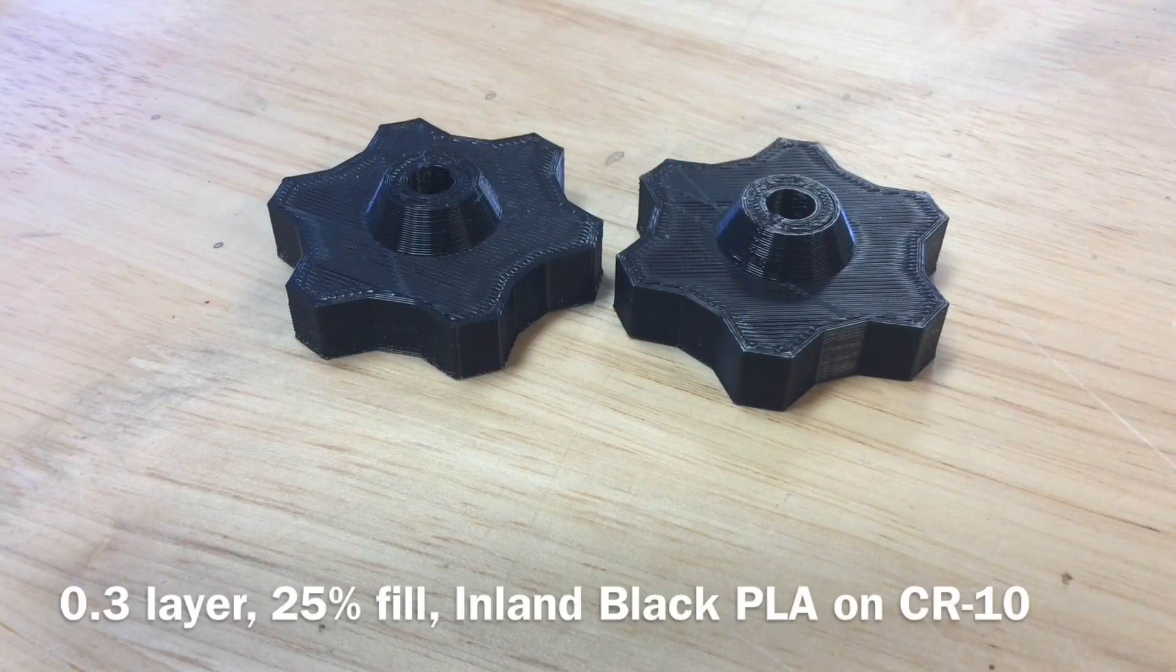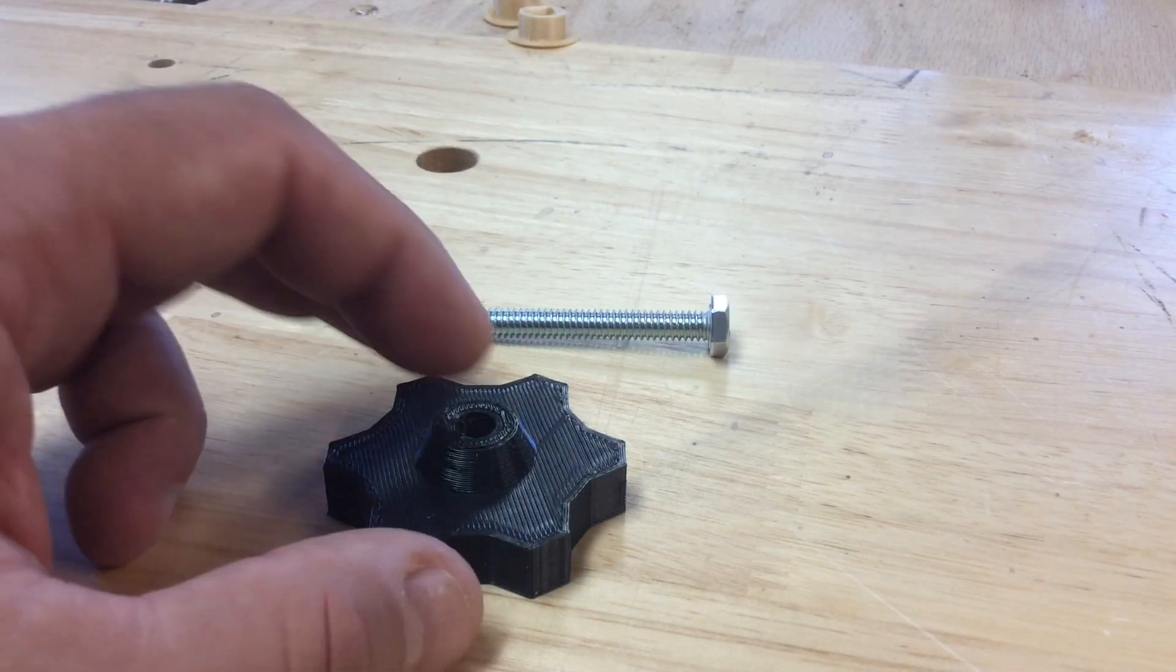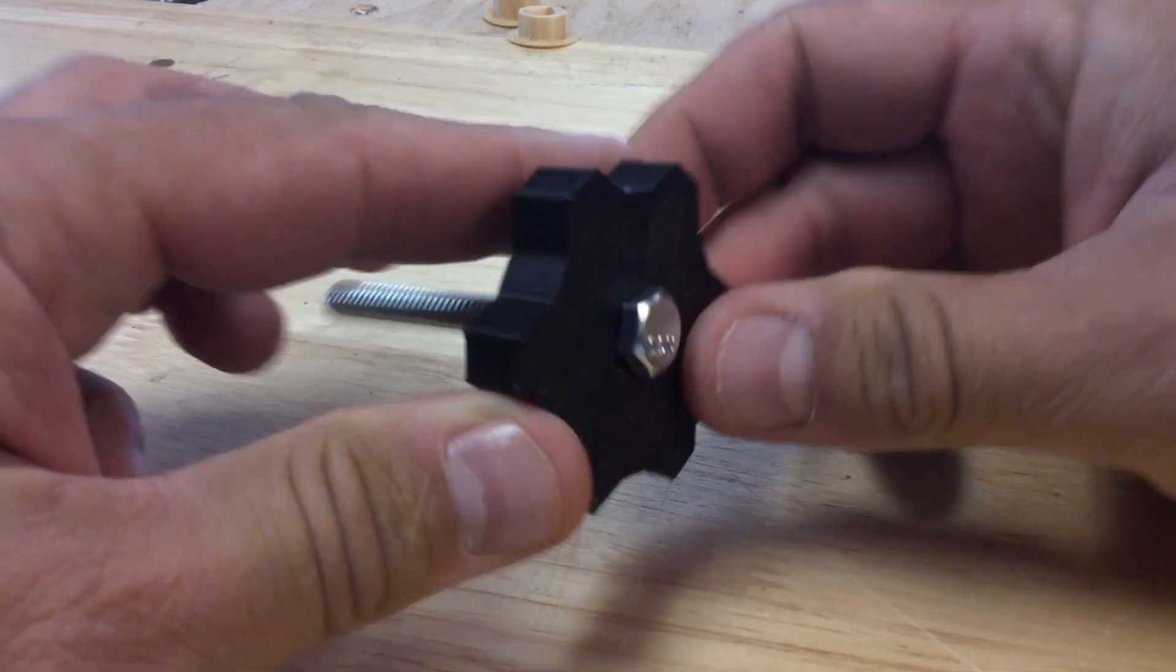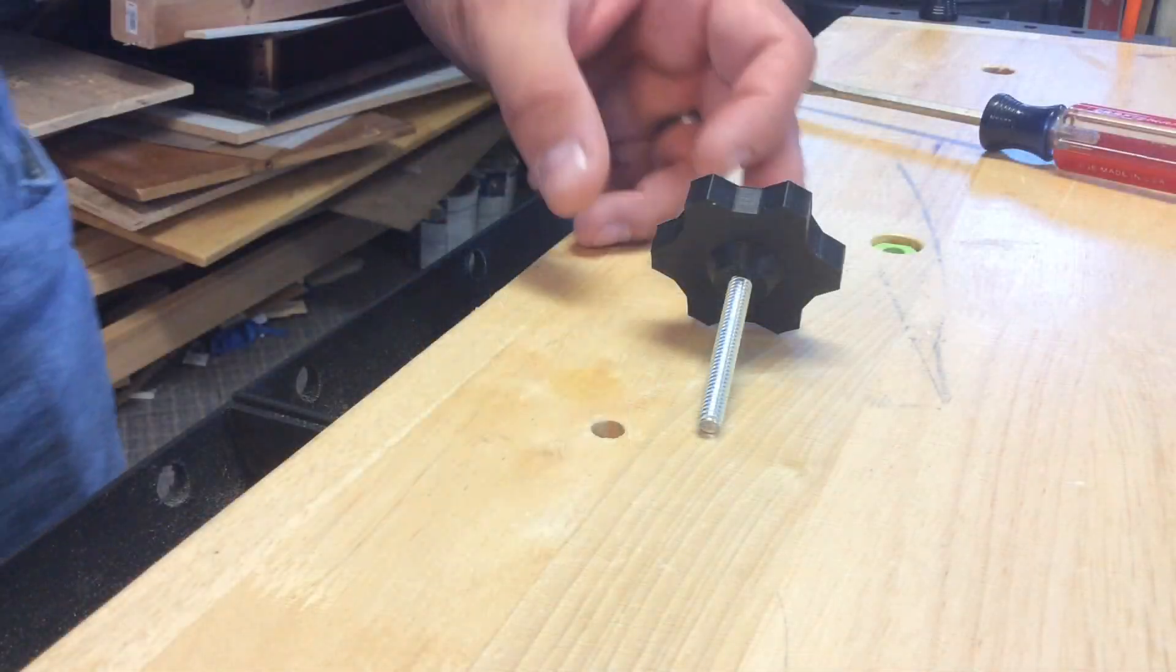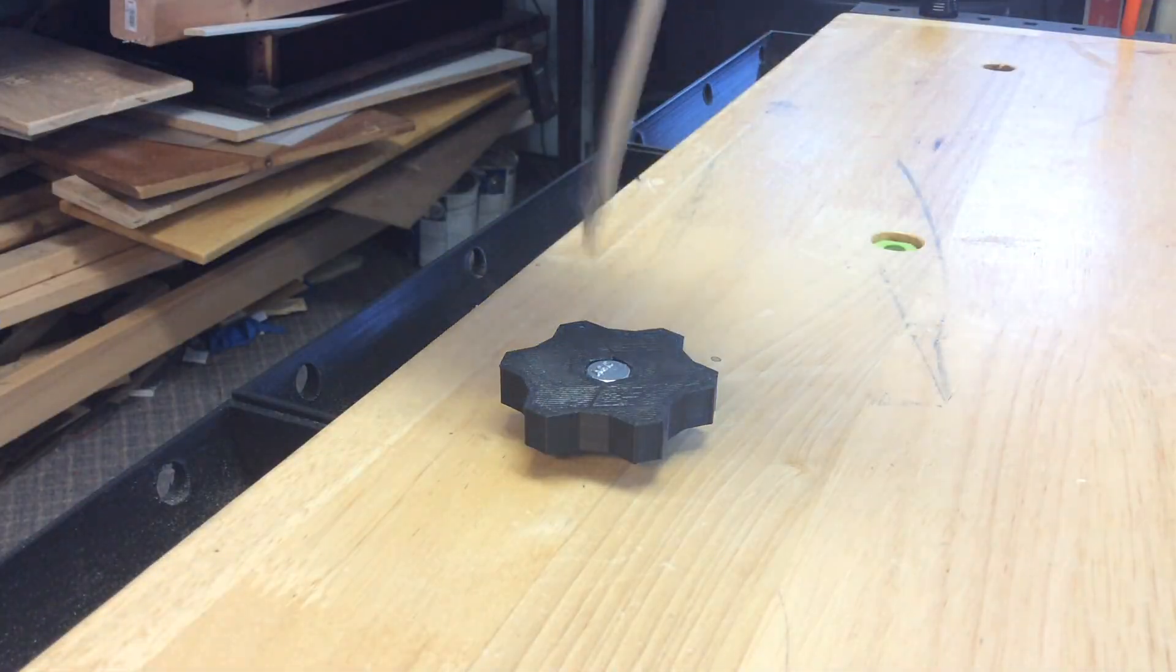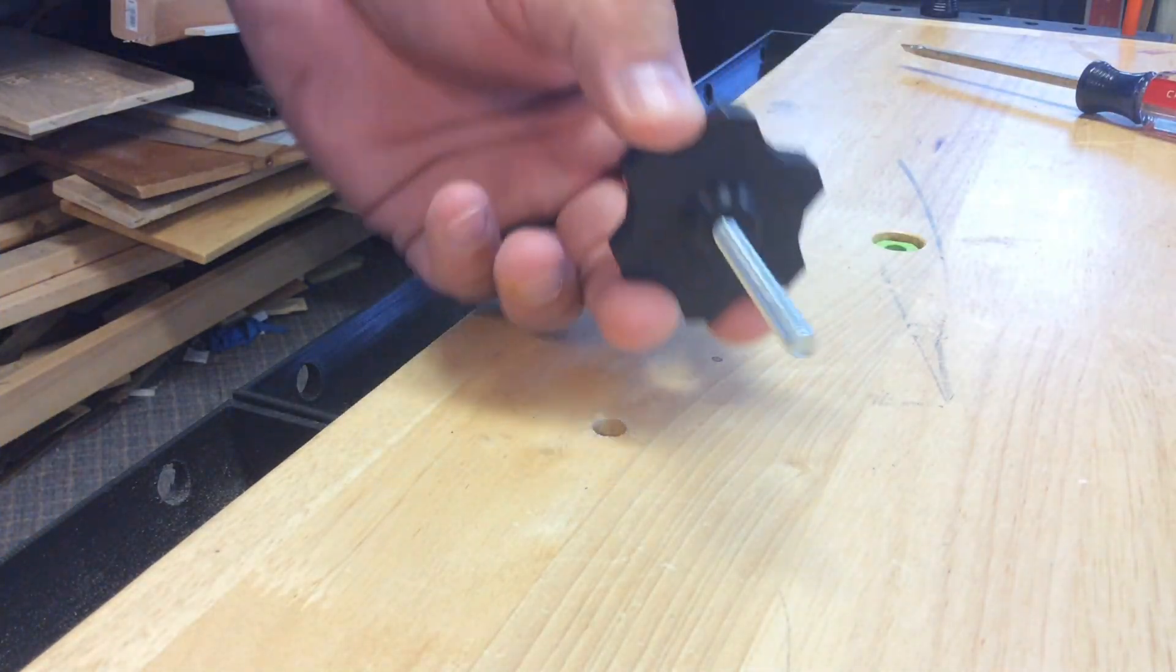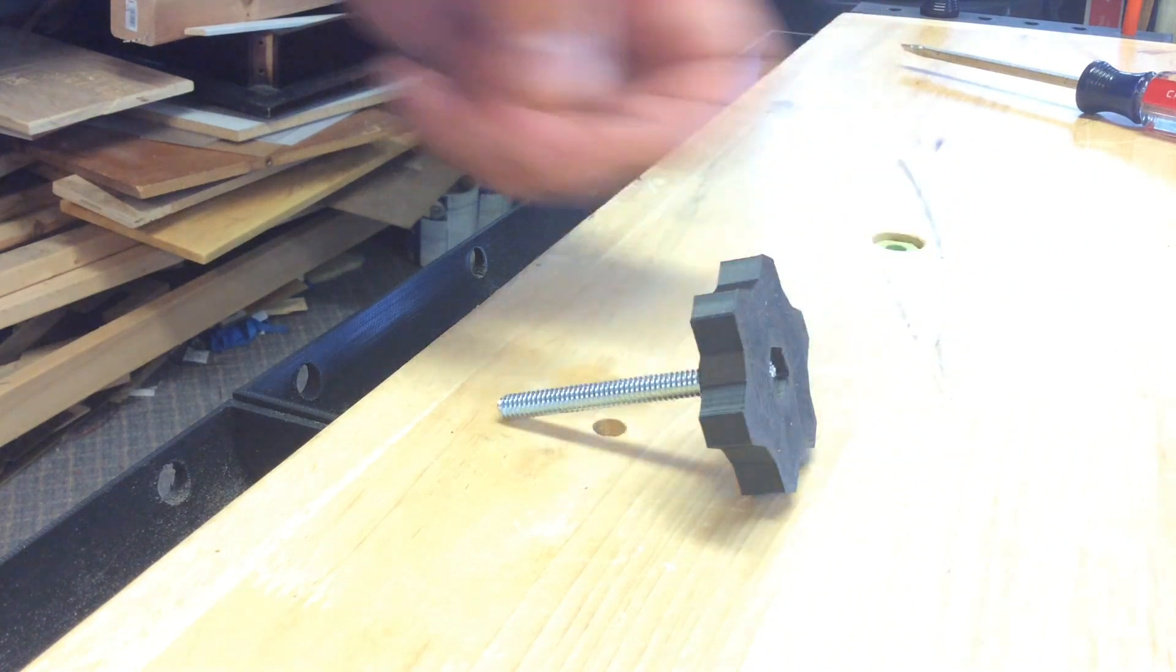I printed a couple knobs on my CR-10 at 25% fill, 0.3 layer height using just the cheap black PLA and they came out excellent. To put the bolt into the knob I just pressed it into the hole and it didn't go all the way in because I undersized that nut head a little bit. So now I just put it into the bench, another hole in my bench which is a smaller one, and lined that up and then I just smacked it with a hammer and the thing went right in. And then it was recessed a little bit so I used a screwdriver to drive it in further and then the bolt was in and it fit nice and tight and wasn't coming out.